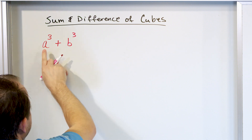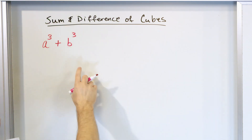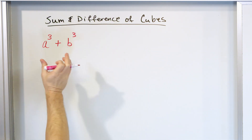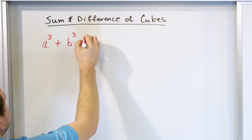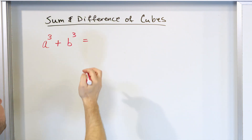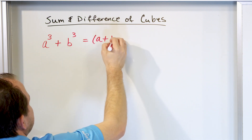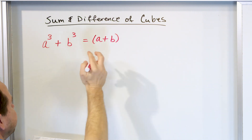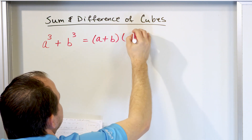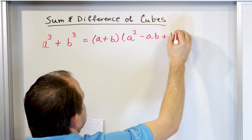A can be anything — a variable cubed, some expression cubed, or whatever. B can also be anything: a number, an expression, or a variable cubed. Any time you have two terms like this added together that are cubed, it can always be written as: A plus B, multiplied by the polynomial A squared minus AB plus B squared.